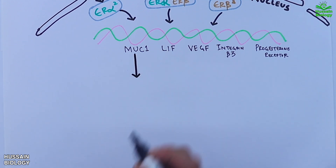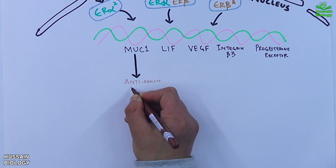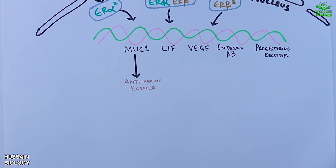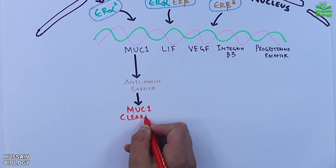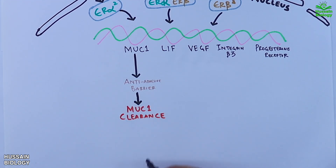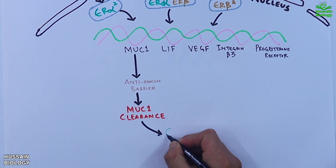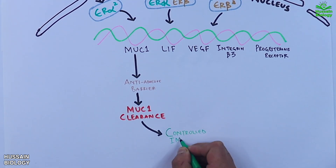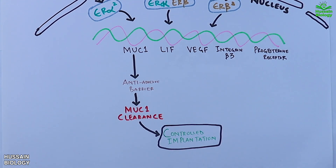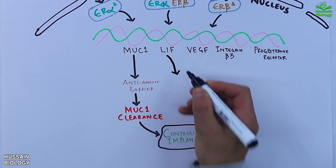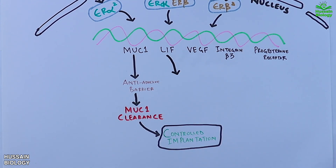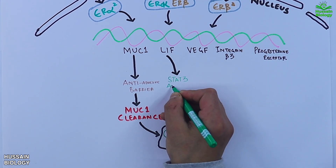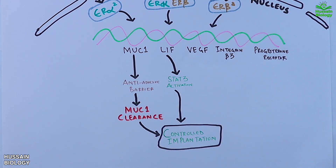First, we have MUC1, which forms the protective uterine lining and acts as an anti-adhesive barrier. When the implantation process kicks in, MUC1 is cleared from the endometrium, enabling controlled implantation. Second is LIF, which is critical for embryo implantation — it acts via STAT3 activation to mediate the implantation process.